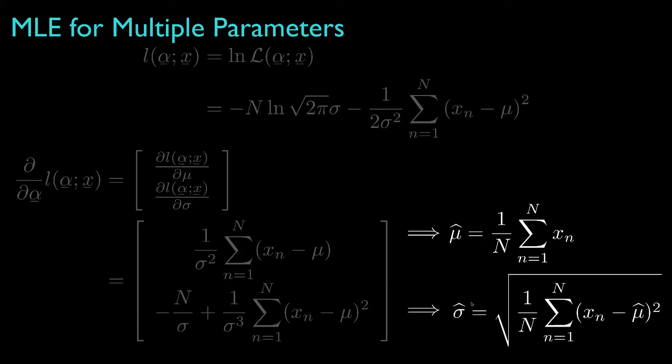The estimator for sigma would be the square root of the sample variance for the data, where the parameter mu, or the mean for the data, is replaced by its maximum likelihood estimate.